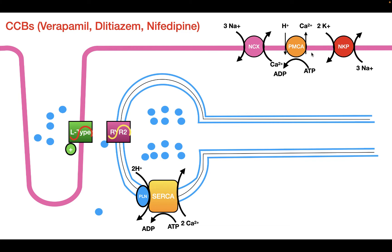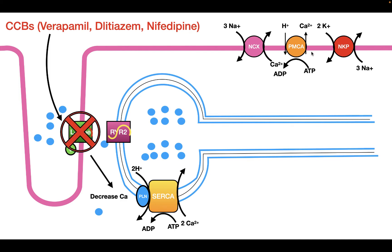Now that we know the ways in which calcium enters the cell and is removed from the cytosol, let's see what calcium channel blockers do. Calcium channel blockers do what their name says — they block calcium channels. The calcium channels they can block include the L-type calcium channels. Whenever you block these L-type calcium channels, this decreases the amount of calcium that enters into the cell, which therefore decreases the contractility.